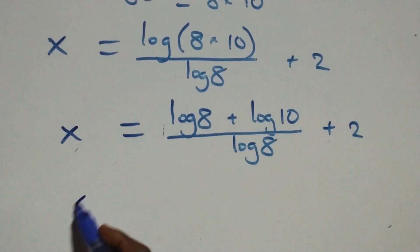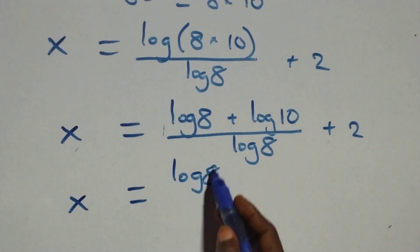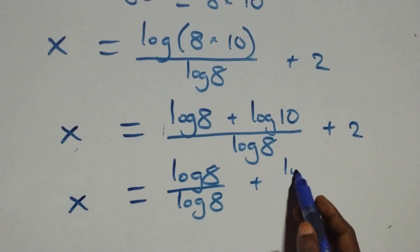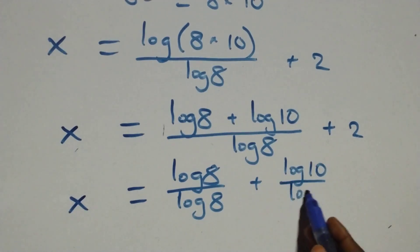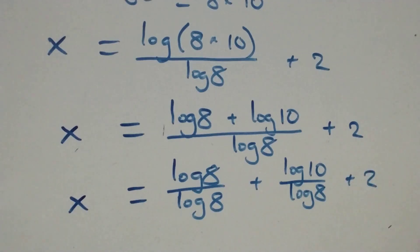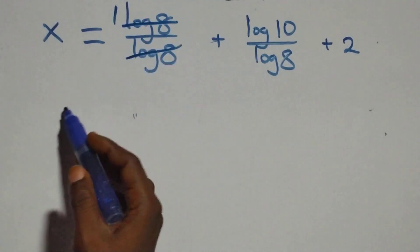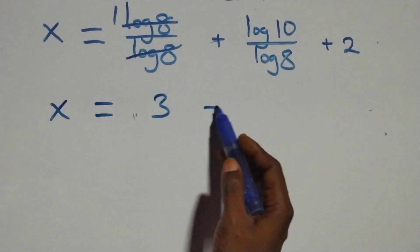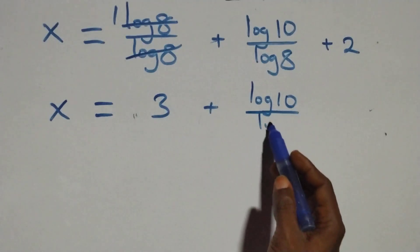We separate this into two fractions: x equals log 8 over log 8 plus log 10 over log 8, plus 2. Log 8 over log 8 gives 1, so this becomes x equals 1 plus 2 plus log 10 over log 8, which is x equals 3 plus log 10 over log 8.